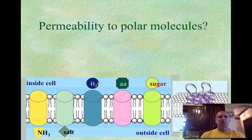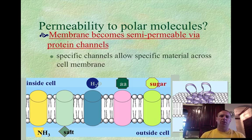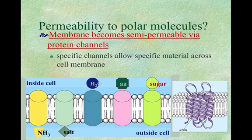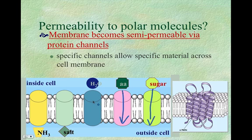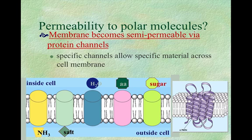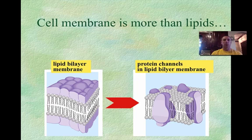So how do you get permeability to polar molecules if they're unable to move across the plasma membrane freely? You do this by integrating protein channels. Protein channels will allow sugar, amino acids, water, salt, and ammonia to move in and out across the membrane. So these channels and pores are what allow polar molecules to move, which gives the membrane its semipermeable nature.